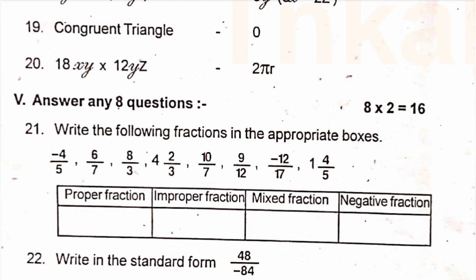Roman number five, answer any eight questions. Twenty one, write the following fractions in the appropriate boxes: minus four by five, six by seven, eight by three, four two by three, 10 by 7, 9 by 12, minus 12 by 17, 1, 4 by 5. So, it is proper fraction, improper fraction, mixed fraction, negative fraction. So, let us fill the box.